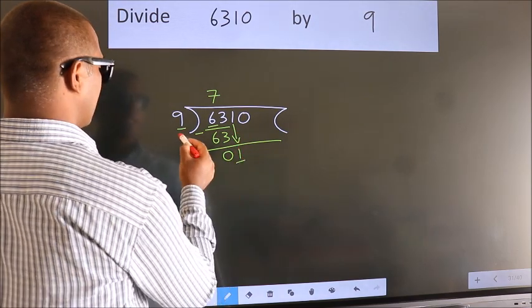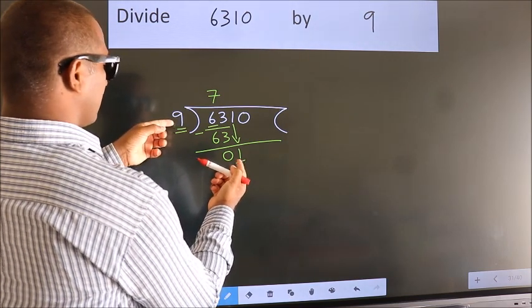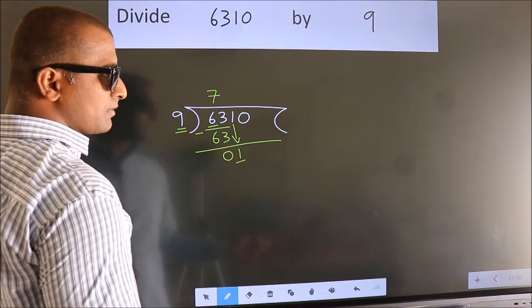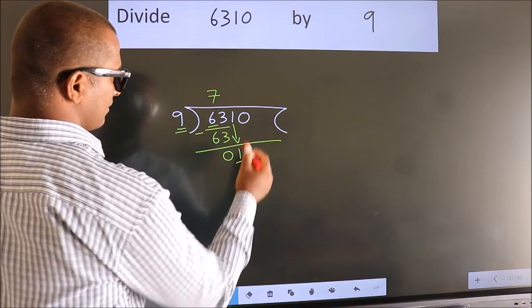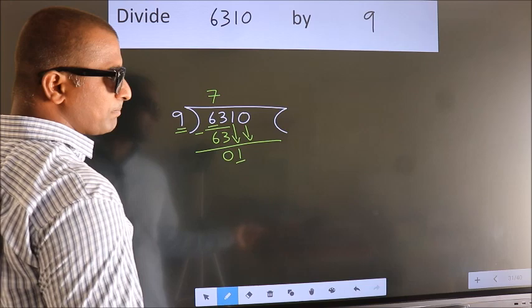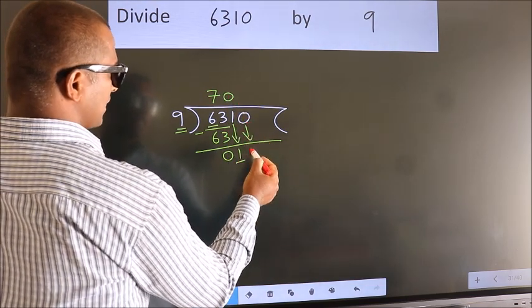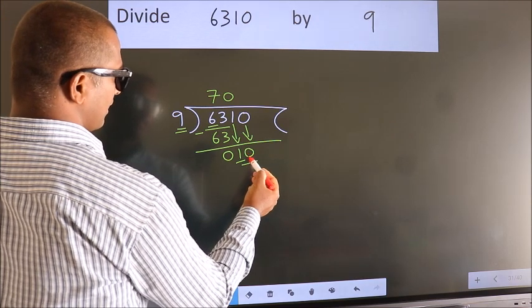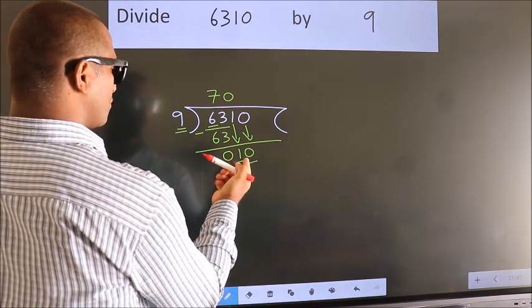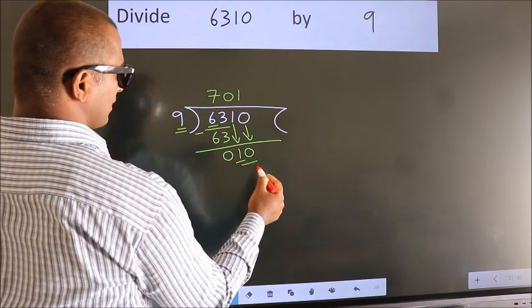Here we have 1. Here 9. 1 is smaller than 9, so we should bring down the second number. And the rule to bring down the second number is put 0 here. Then only we can bring down this number. So 10. A number close to 10 in the 9 table is 9 times 1 equals 9.